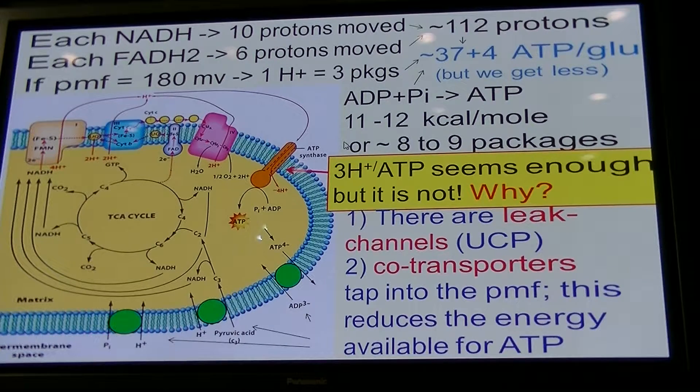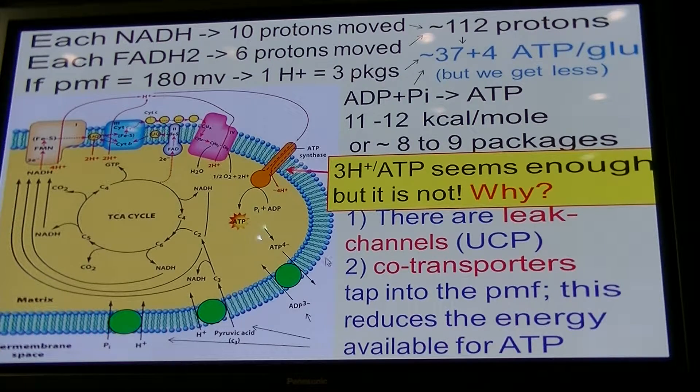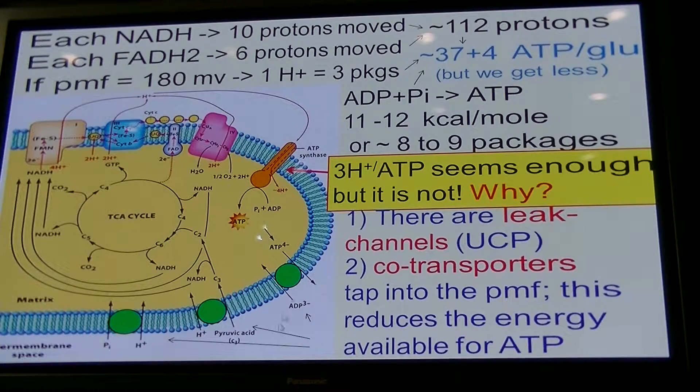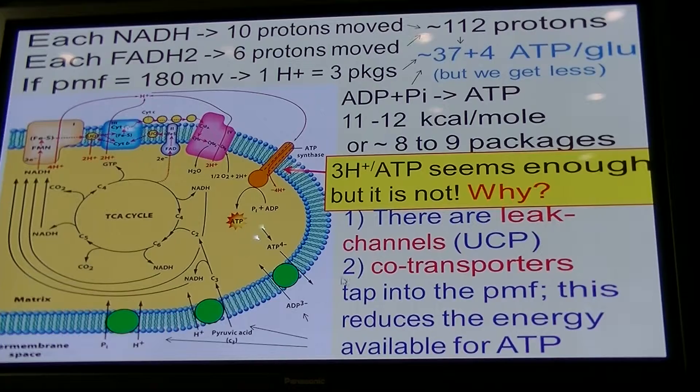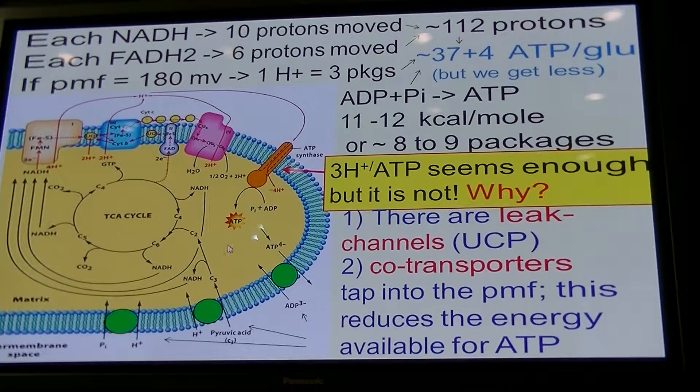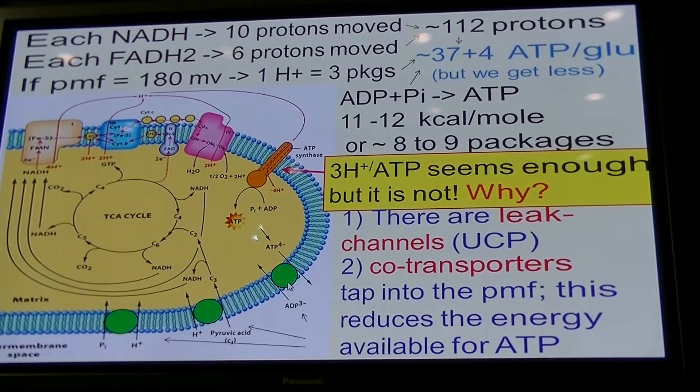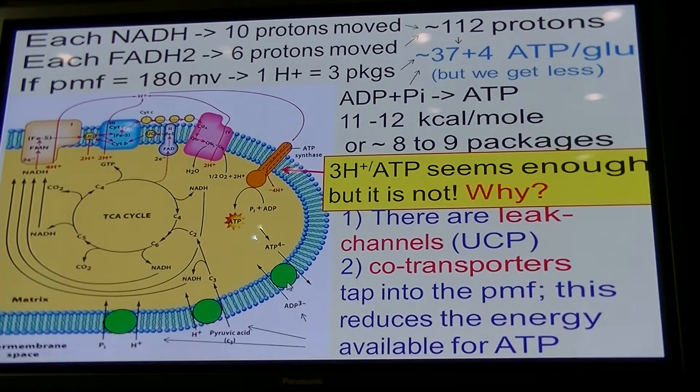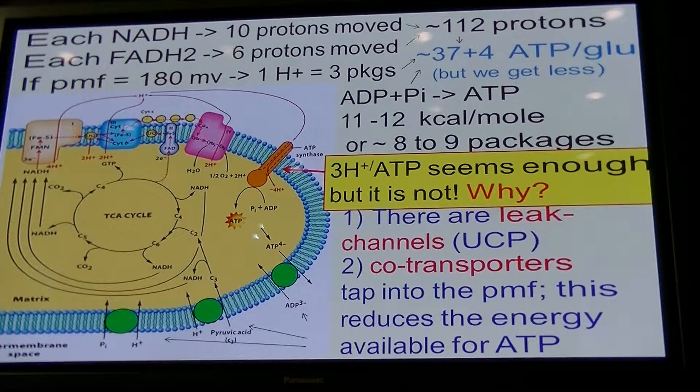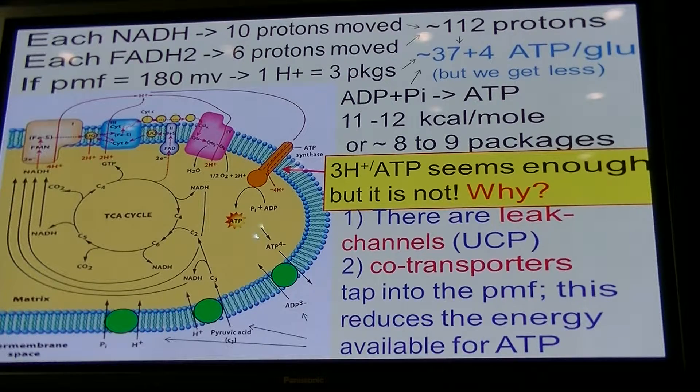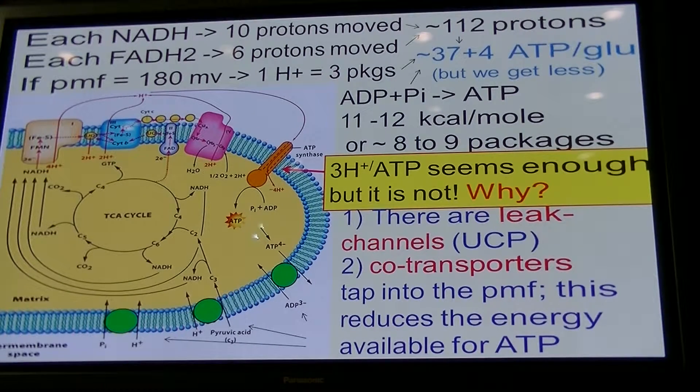You might sacrifice some ATP synthesis. Another reason is that in metabolically active mitochondria there are co-transport systems, which have to tap into the proton-motive force as well. And when you use energy from the proton-motive force for another purpose, you cannot use it for ATP synthesis anymore.